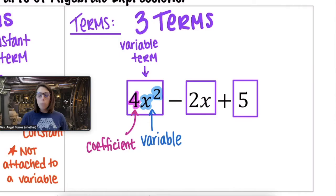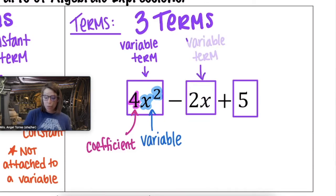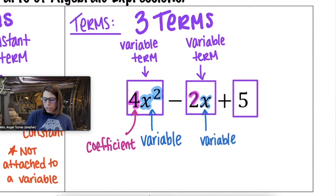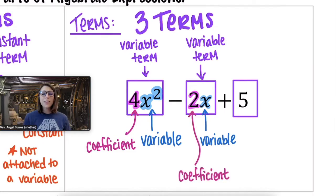Moving on to our next term. I notice that this term is 2x, meaning this is yet again another variable term. What's the variable here? Unlike the first term, our variable is just x. And what do we call that 2 that's attached to x? That's right, the coefficient.